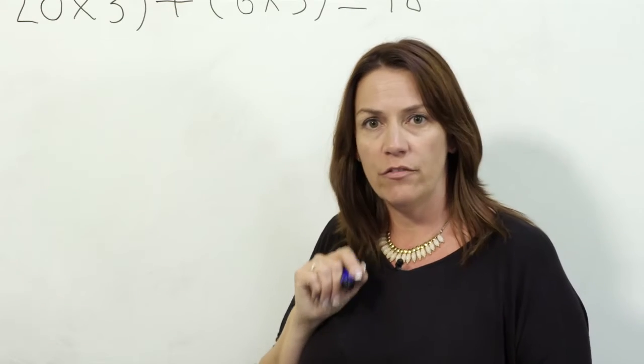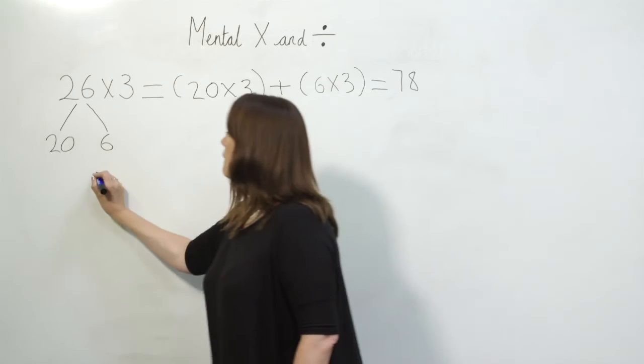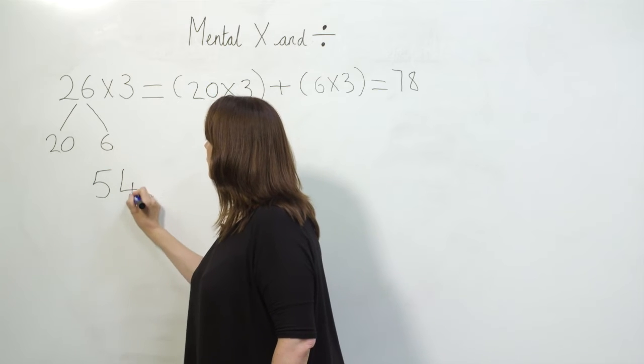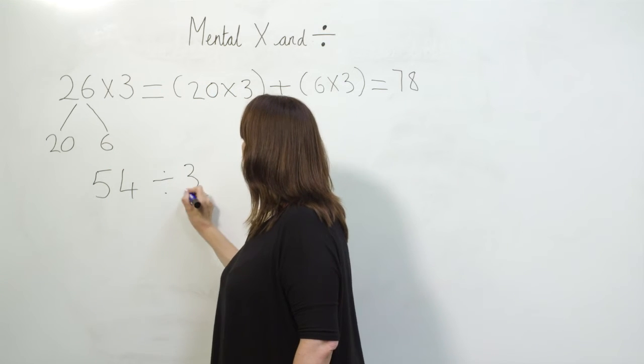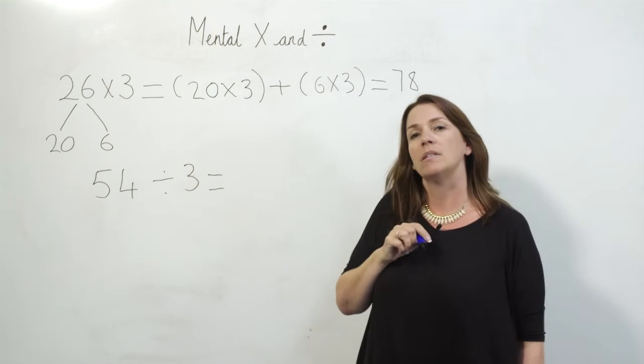So how would this look with division? If I have 54 divided by 3, I can use number bonds to help me.